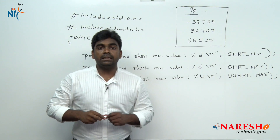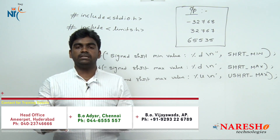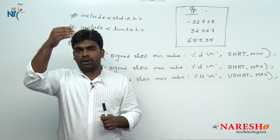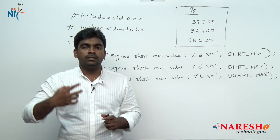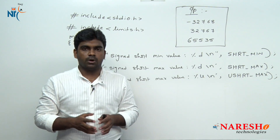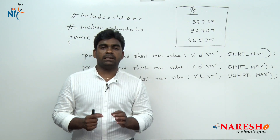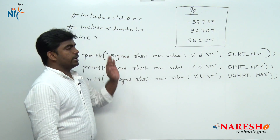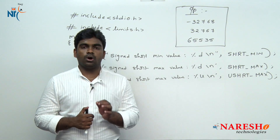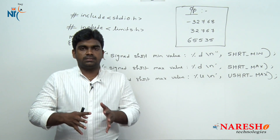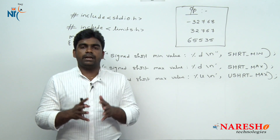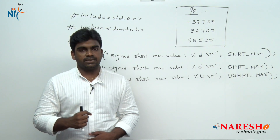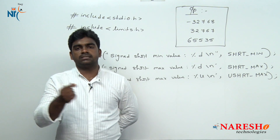This is the way to print the limits of each data type. No need to remember the limits — if you know the limits.h header file, by writing one program you can find out all the limits of each data type instantly. Every data type limit is available in limits.h as global constant variables. This is all about sizeof and limits.h. In the next session we are going to discuss operators in C. Thank you for watching, please subscribe to the Naresh IT channel.